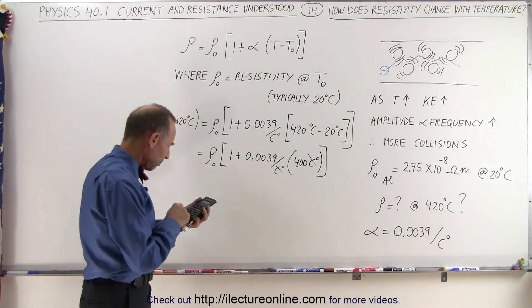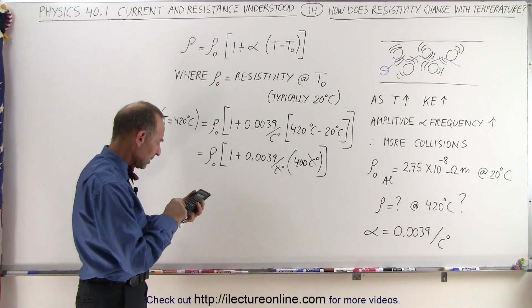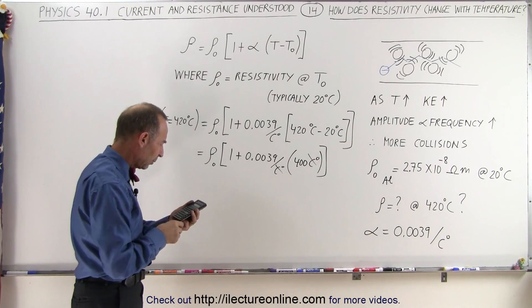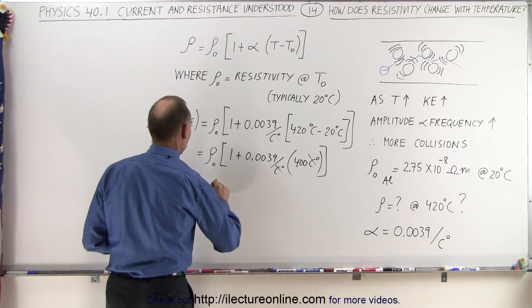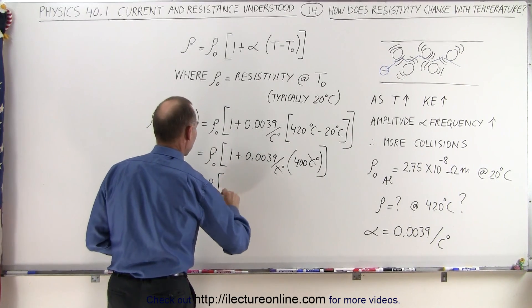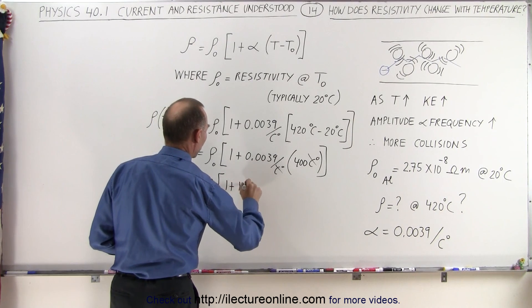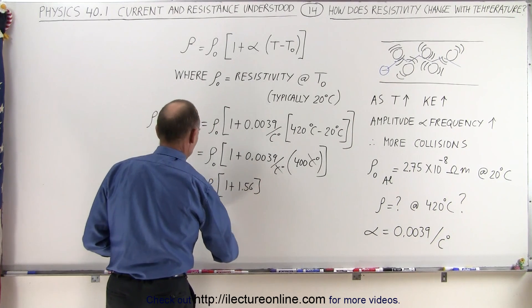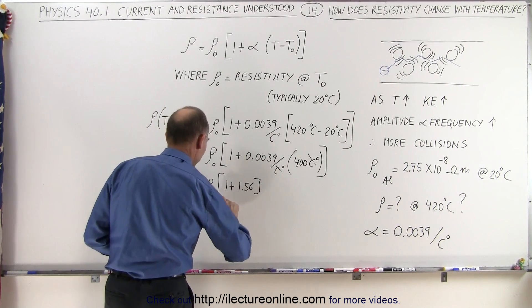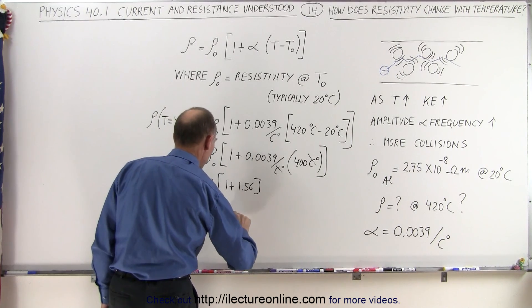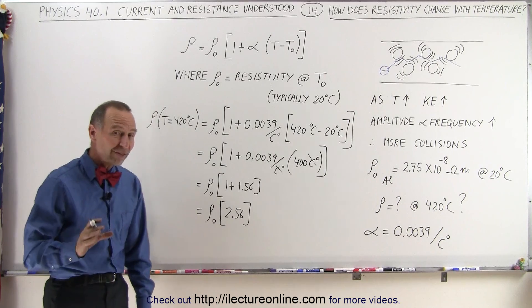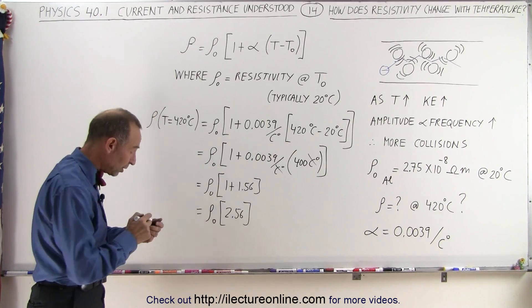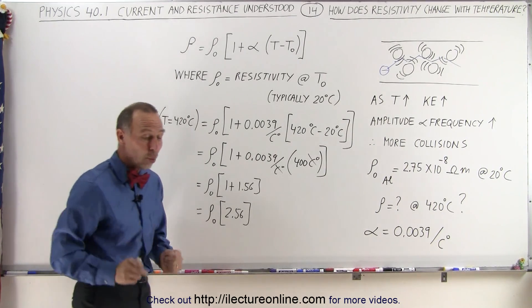So that would be 0.0039 times 400, which is 1.56. So this would be equal to the resistivity at 20 degrees centigrade, times 1 plus 1.56, which is equal to resistivity at 20 degrees centigrade, times 2.56. So notice it would be 2.56 the resistivity at 20 degrees centigrade. That is actually quite a difference.